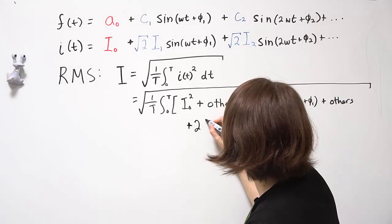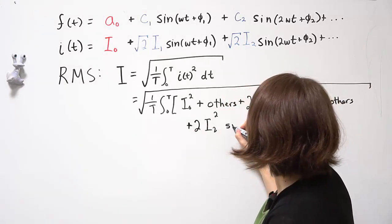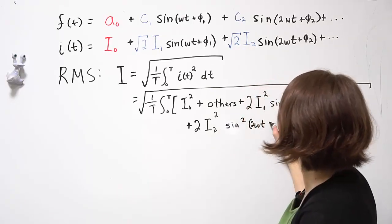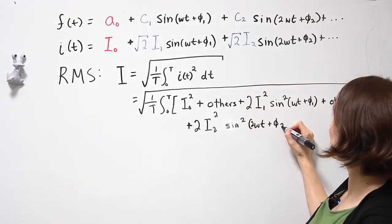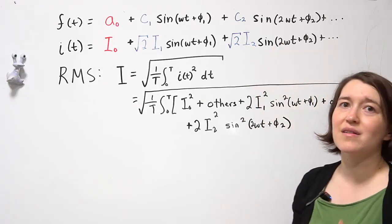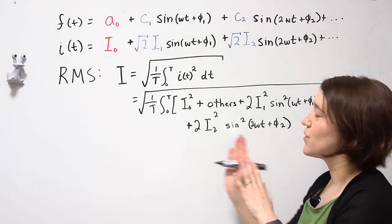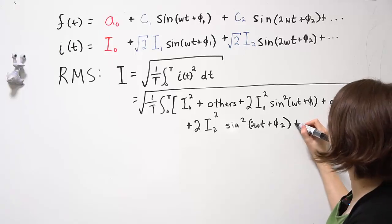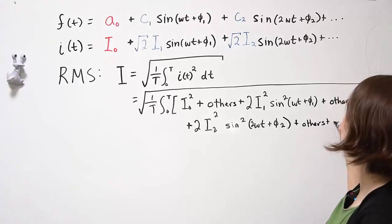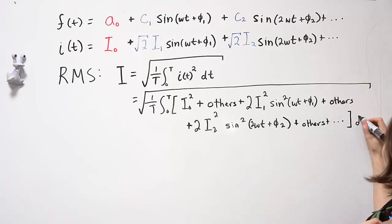And we would get this general term 2I2 squared and sine squared of 2 omega t plus phi 2. And again, as we multiply by other ones, they are going to be different frequencies. So they are going to become zero once we take the average. So I'm going to put that as others. And it continues on in this fashion. And close the integral.